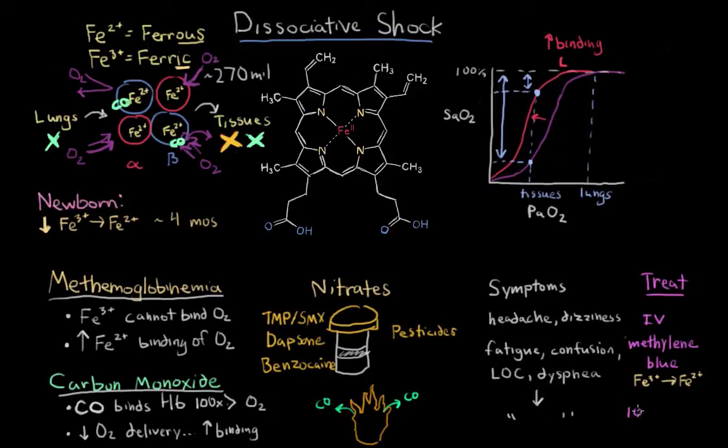And the treatment for carbon monoxide will be a hundred percent oxygen. The idea is if you oversaturate the patient with oxygen, it can hopefully cause carbon monoxide to be kicked off of the hemoglobin molecule. So that's dissociative shock, an inability for oxygen to dissociate from hemoglobin.